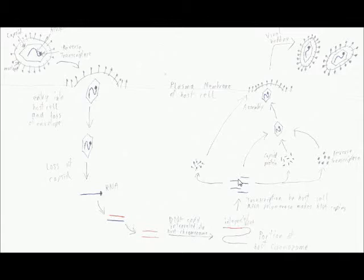So now we have many RNA copies that go into making every part of the new virus. Some make the envelope, some make the capsid, some make the reverse transcriptase, and some go directly into the virus as single strands of RNA.